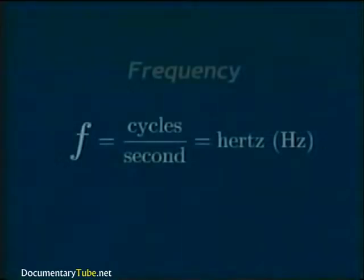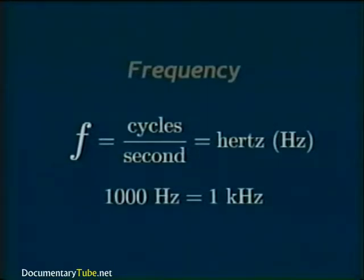Waves also have an associated frequency. Frequency, abbreviated with a lowercase f, is defined as the number of cycles of repetition per second — in other words, the number of wavelengths that have passed by a stationary point in one second's time. The unit of frequency used here is called hertz, abbreviated Hz, defined as cycles of the wave per second. When the number of hertz exceeds 1,000, it's common to write the amount in kilohertz. For example, 1,000 hertz equals 1 kilohertz.